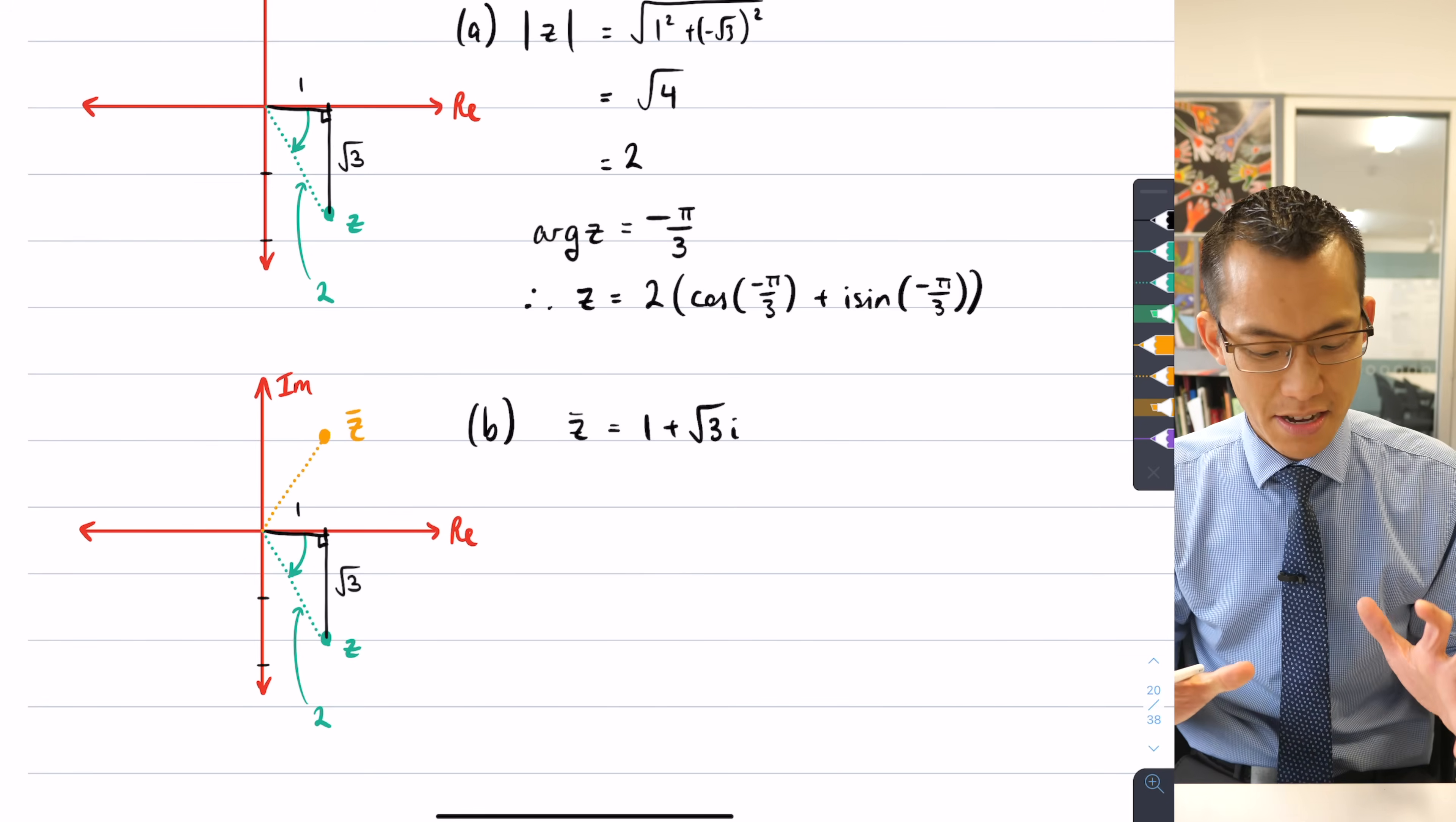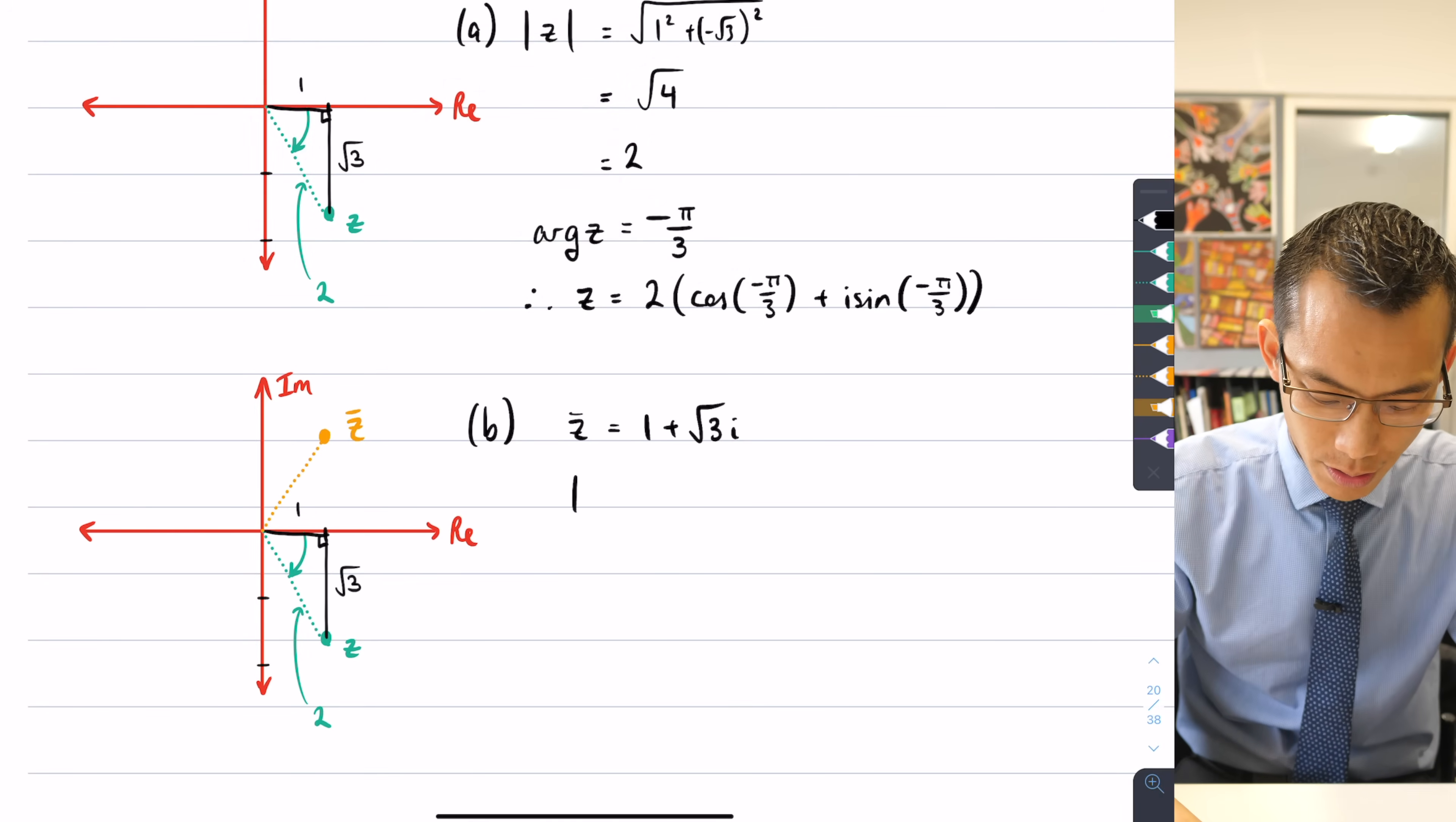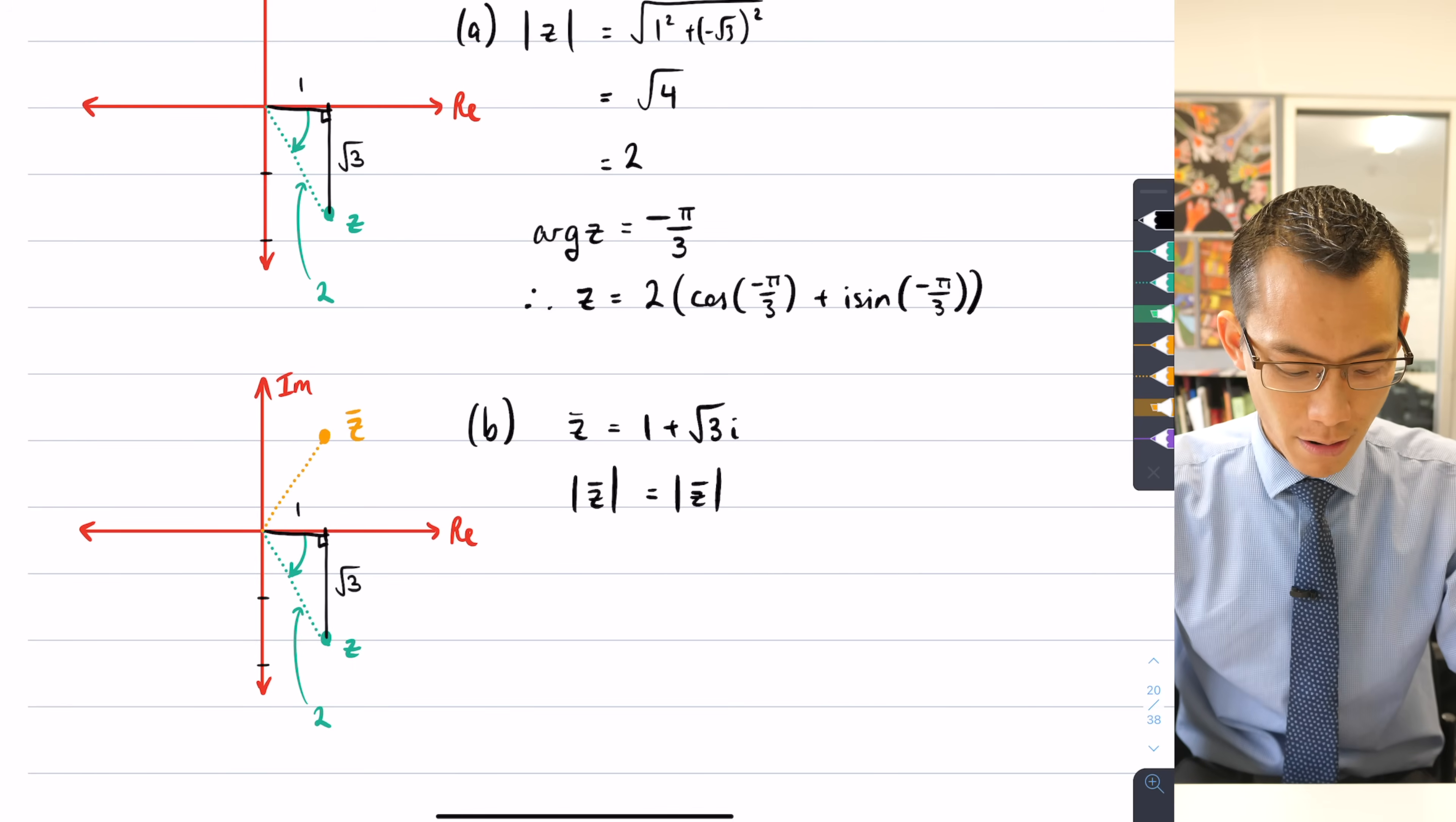Now, hopefully without any further calculation or anything like that, you can see that the modulus of z̄ is going to equal the modulus of z. I'll say that like so, modulus of z̄ equals the modulus of z.